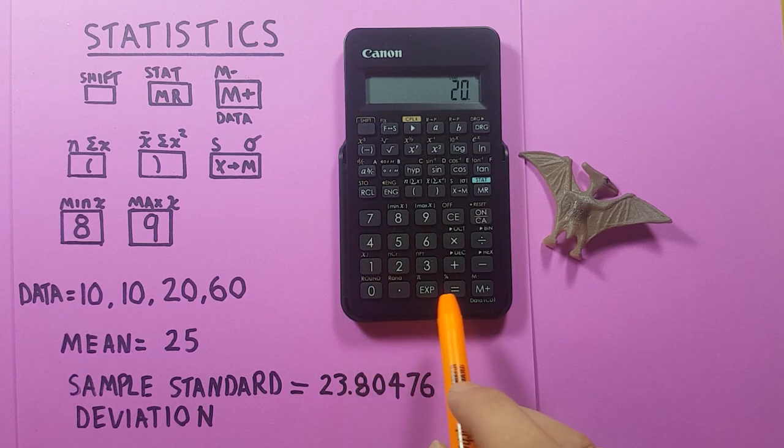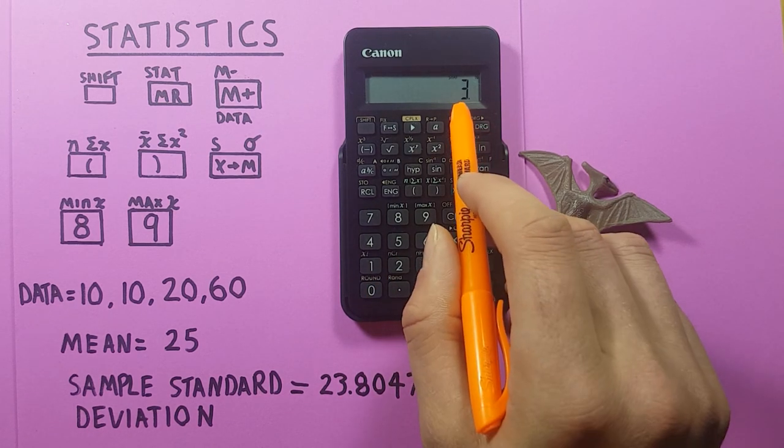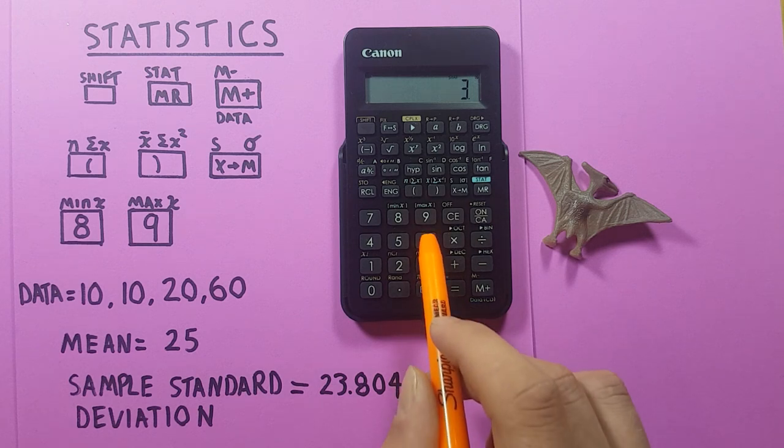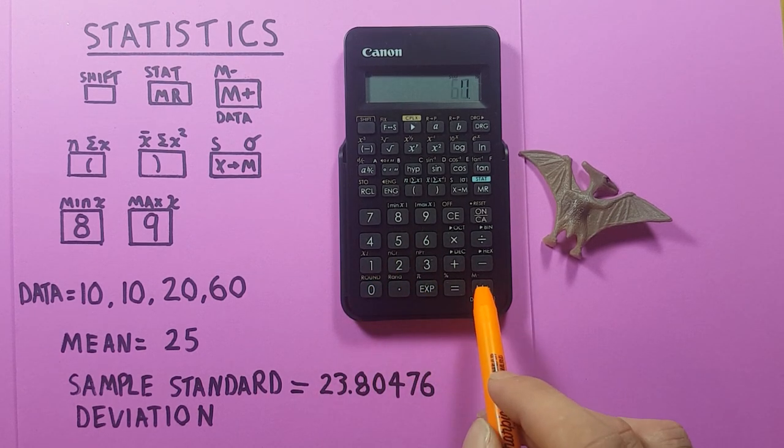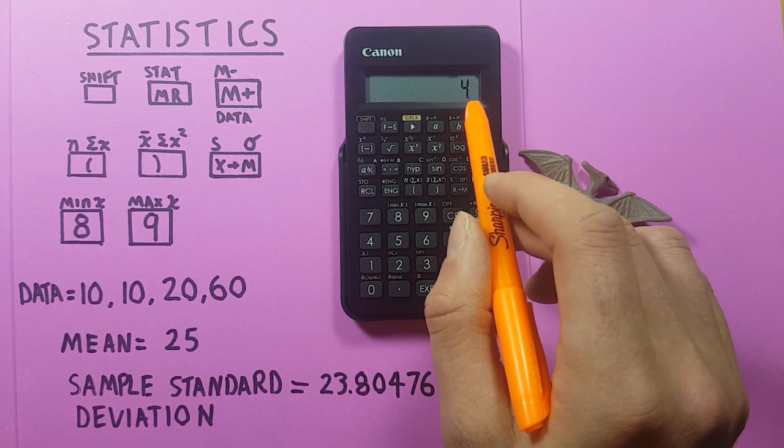20, M plus, three items in our data set, and 60. M plus, four items in our data set.